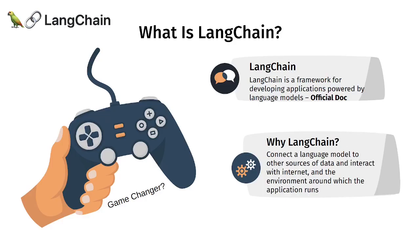LangChain is a framework for developing applications powered by large language models. LLM stands for large language models, such as ChatGPT and other large language models out there. LangChain helps us build applications that take advantage of these large language models. It abstracts all the difficulties and API calls for you, so that things are much easier to work with.